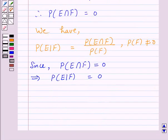Hence, the conditional probability of the event 'the coin shows a tail given that at least one die shows a 3' is 0. So, the answer for the above question is 0.